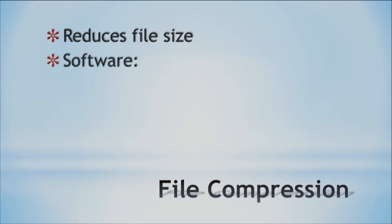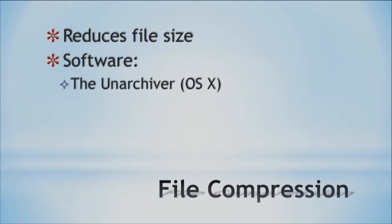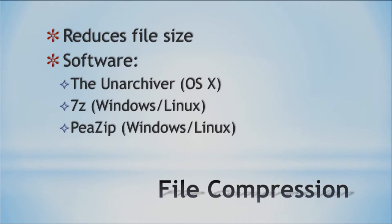Different software for file compression from OSX is called the Unarchiver. Another one is 7z, which runs on Windows and Linux. We also have pzip, which is Windows and Linux. Then you have WinRAR, which only runs on Windows. File compression is great because it helps reduce file size — for example, if you're trying to send a document through email, you might want to compress it to save space so you don't have to upload such a large attachment.